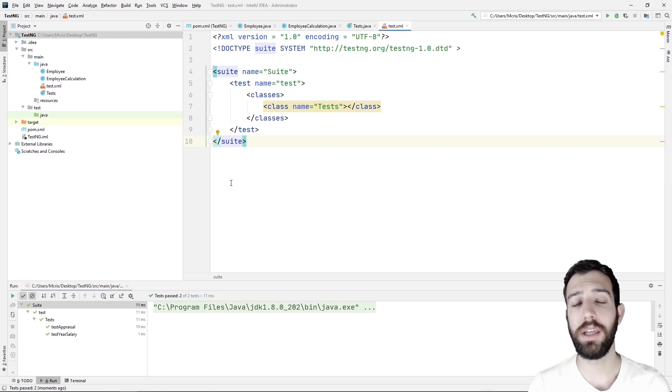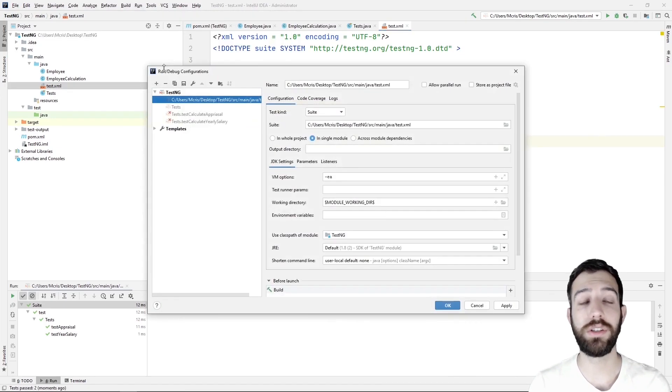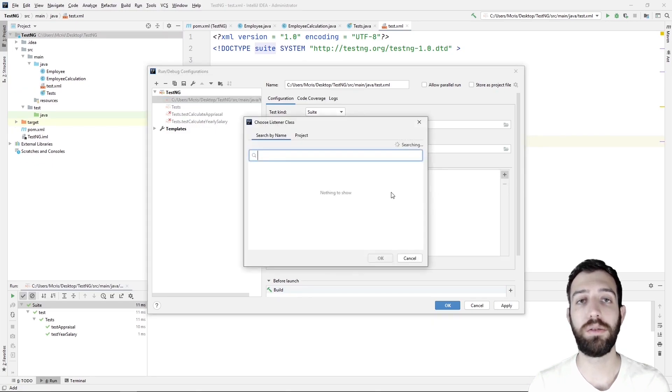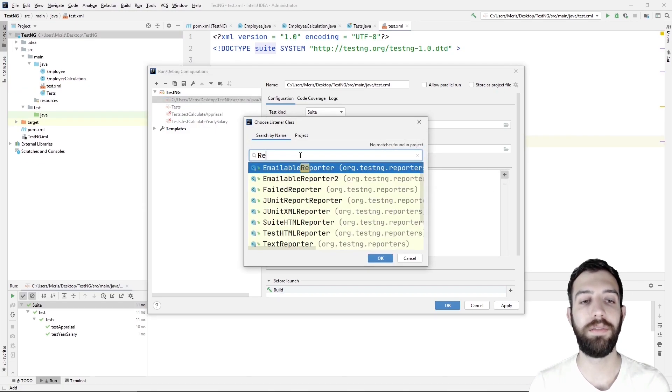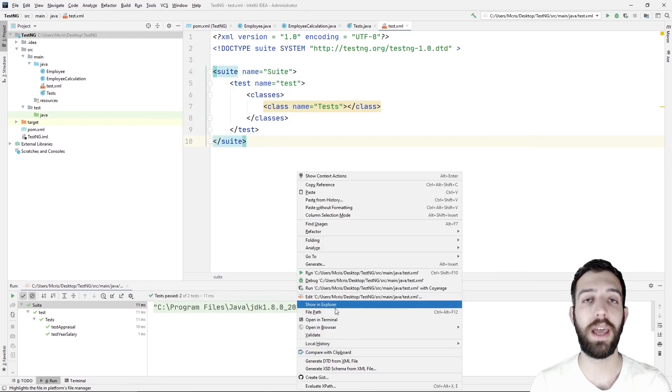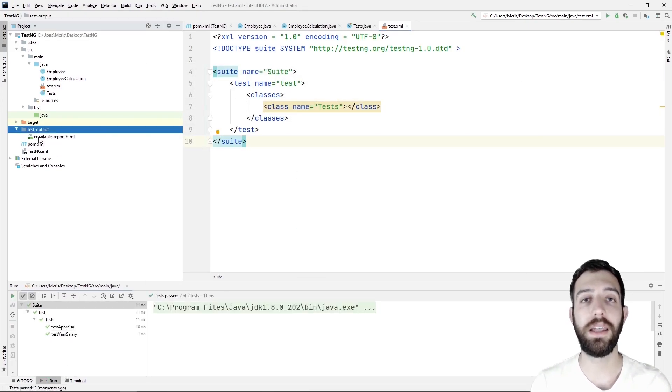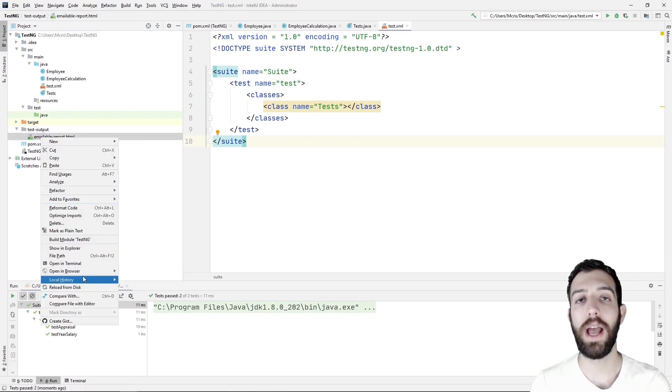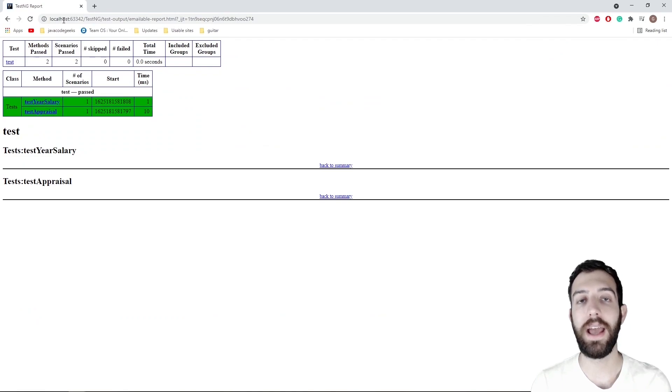Now, to be able to see the results from an HTML page, we need to go to run configurations, edit configurations, then listeners and add two listeners, the email reporter and the failure reporter listeners. Now, if we run again the program through the XML file, we can see that it creates a new HTML output in which we can see the HTML page that shows the two methods that have passed the tests.